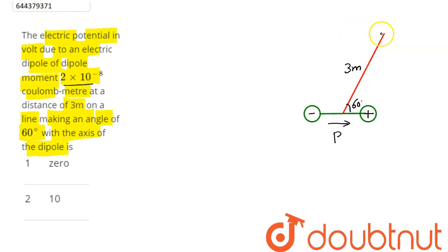so at this point P we can see here electric potential is being asked which is given by the formula k × p × cos θ divided by r square